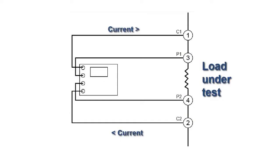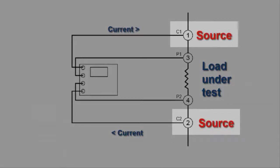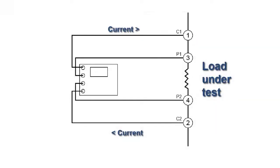In this setup, two separate pairs of probes are used. Pair 1 and 2, sometimes referred to as the source probes, provide a known quantity of constant current, as in the two-wire setup.